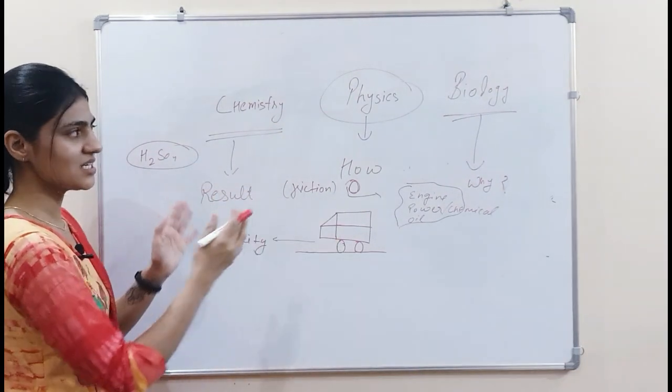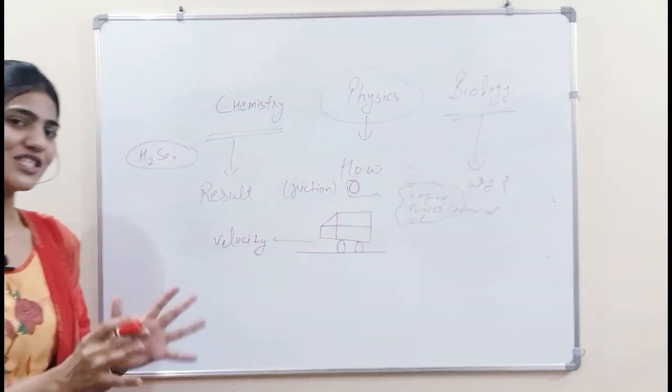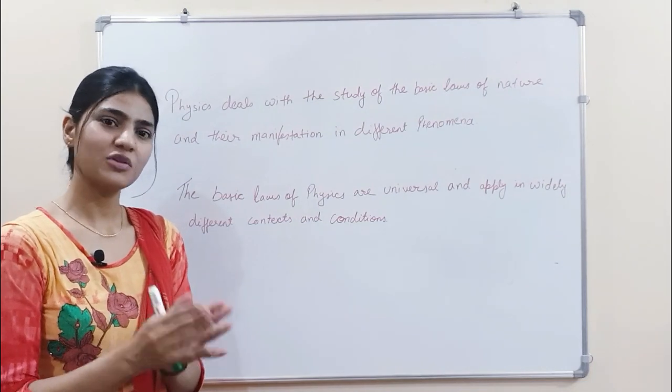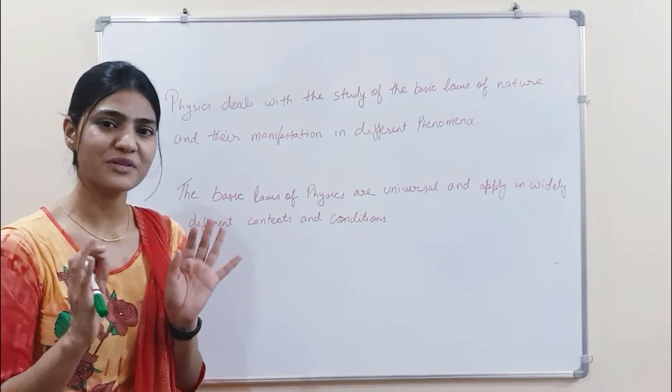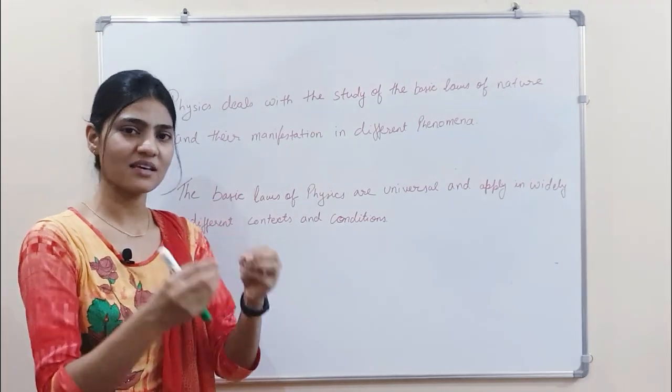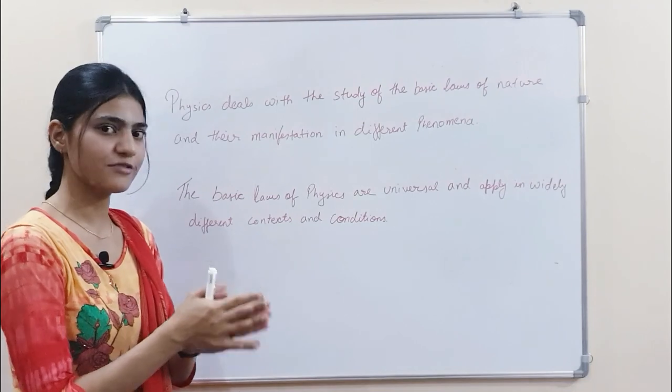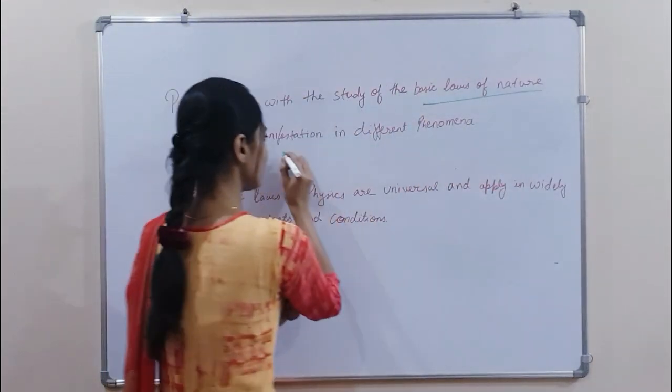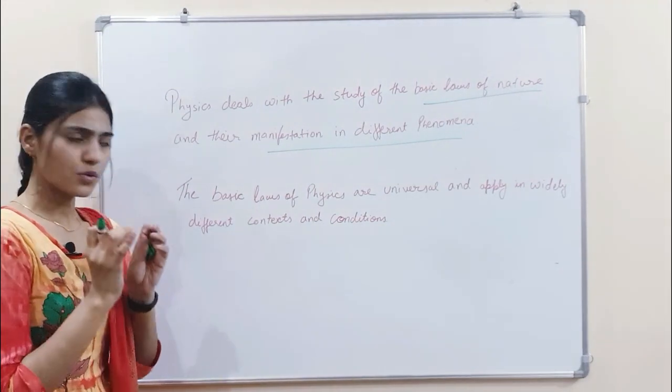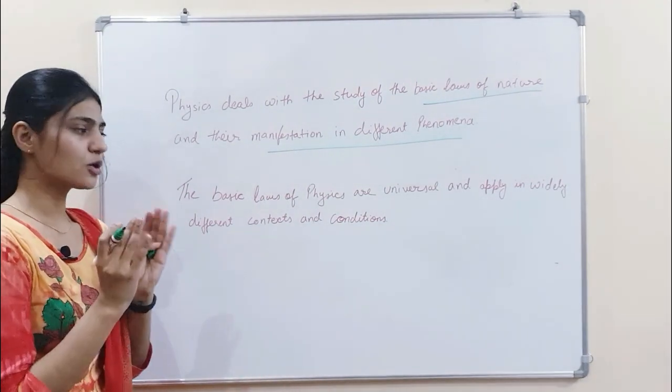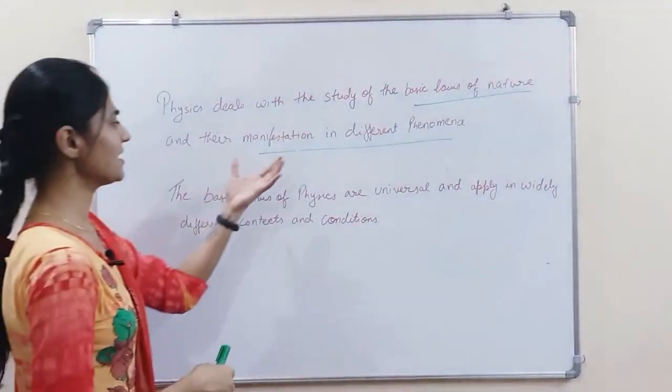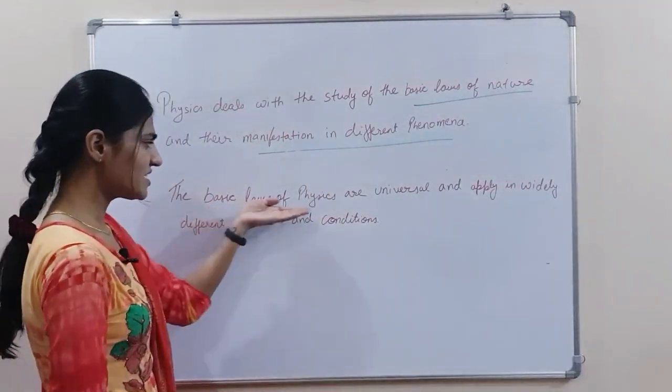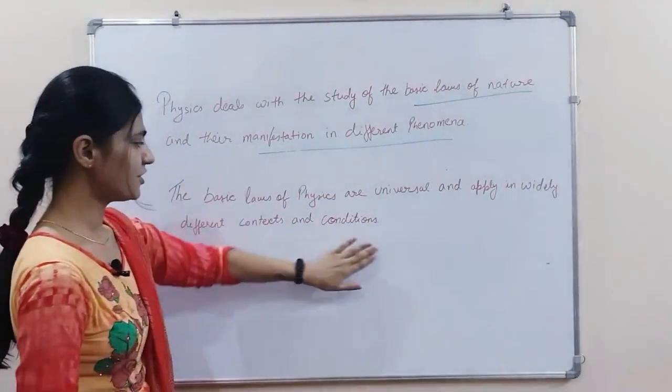How is physics different from other sciences? Now we need a proper definition. Physics can't give it a precise definition. No one can give it a precise definition. But then we can broadly describe it that physics deals with the study of basic laws of nature and their manifestation in different phenomena. The basic laws of physics are universal and apply in widely different contexts and conditions.